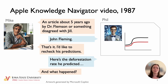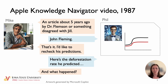They keep talking. Mike says there was an article about five years ago by Dr. Flemson or something — he thinks he disagreed with Jill. Phil helpfully jumps in and says, John Fleming. Mike confirms: yeah, that's it, I'll need to recheck his predictions. Phil says, here are the deforestation rates he predicted, pulling in data and popping up charts on the screen from John Fleming's recent research.